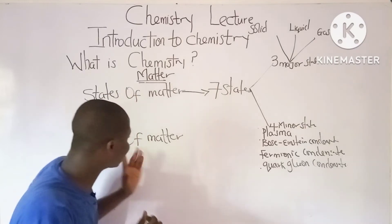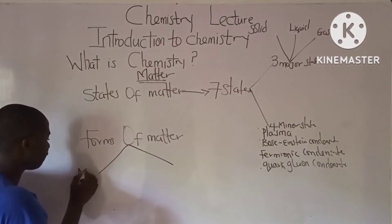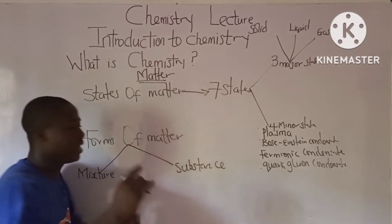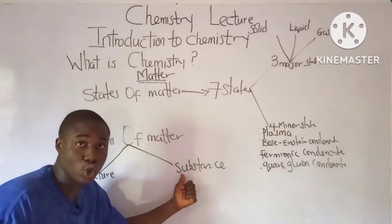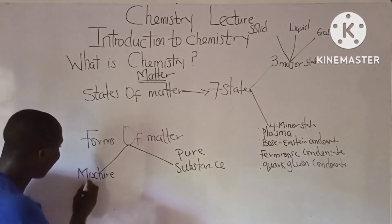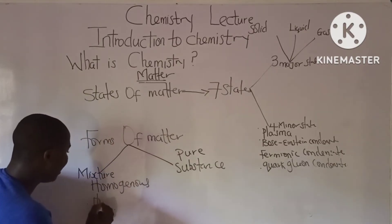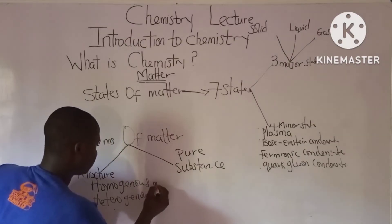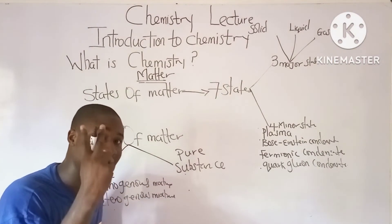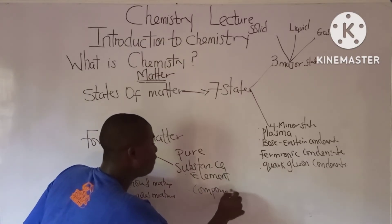Moving to forms of matter: we have two forms of matter. The first is mixture and the other is pure substances. Mixtures are impure while substances are pure. Mixtures are of two types: homogeneous mixture and heterogeneous mixture. Pure substances are also divided into two: elements and compounds.